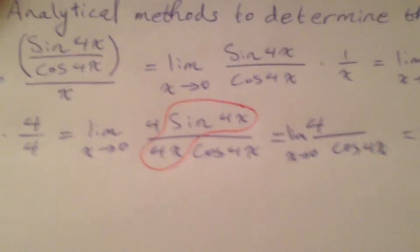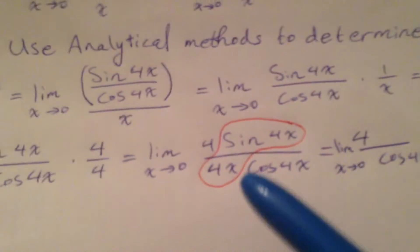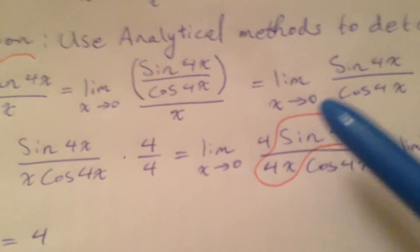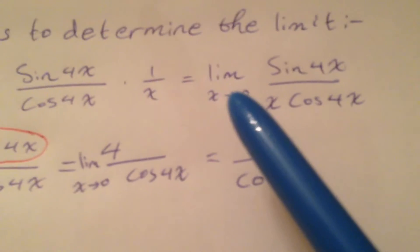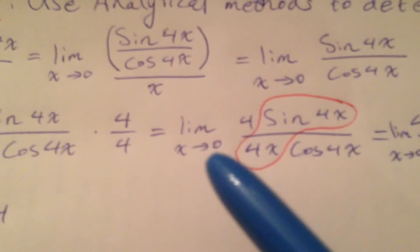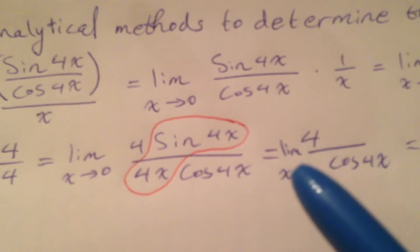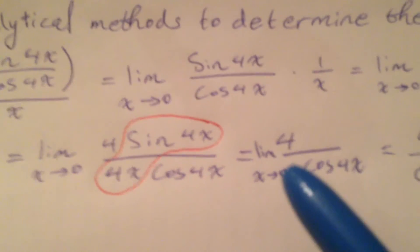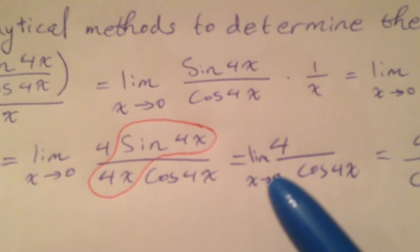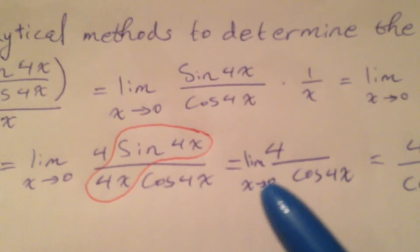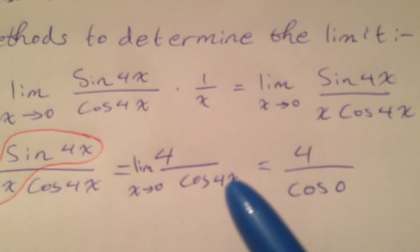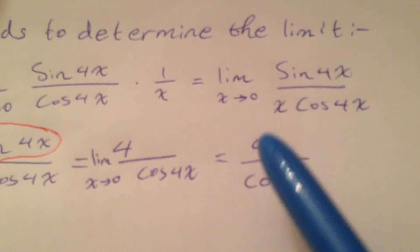In every single step, don't forget to write the limit notation — limit notation, limit notation — until you actually plug in the value. Once you plug in 0, or whatever x is approaching, then you don't have to write the limit anymore. So here we plug in 0 and we no longer need the limit notation.